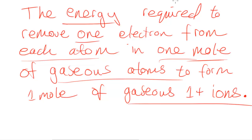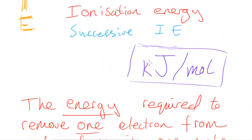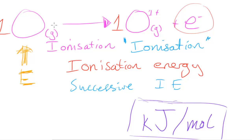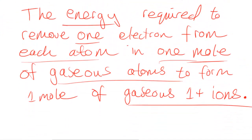So that's the general idea of ionization energy. If the ionization energy is lower per mole, that means it will be easier to remove an electron from one mole of gaseous atoms, since we need less energy. I'll go into what can affect that in the next video. I hope this was helpful — see you in the next video.